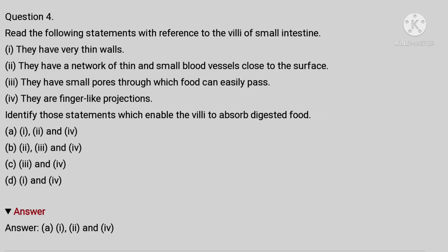Fourth question is read the following statements with reference to the villi of small intestine. First, they have very thin walls. Second, they have a network of thin and small blood vessels close to the surface. Third, they have small pores through which food can easily pass. Fourth, they are finger-like projections. Identify those statements which enable the villi to absorb digested food.